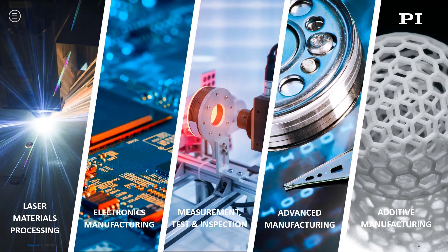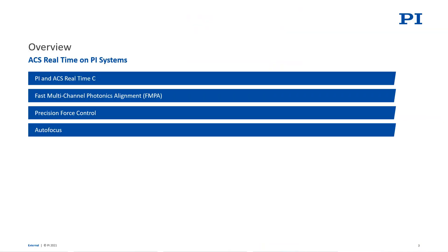PI is a company specializing in high precision motion products used across a diverse array of applications and end markets. We've developed a number of differentiated products, technologies, and capability. With the advent of ACS real-time C, we can now leverage ACS features, functions, and capability to enhance PI product offerings in specific applications including fast multi-channel photonics alignment (FMPA), precision force control, and autofocus applications.